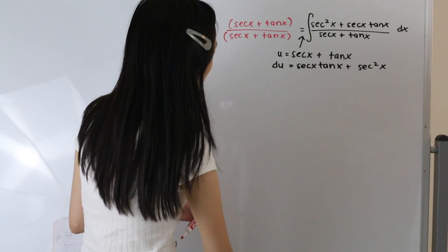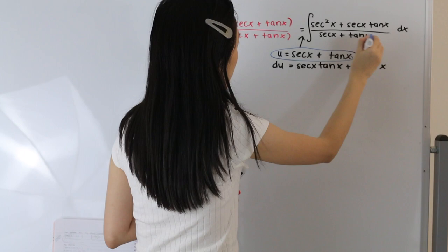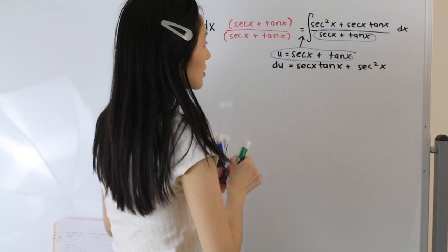So we can see here that we have u for our denominator and we have du in our numerator.